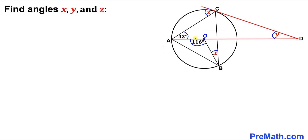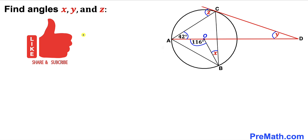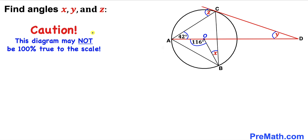Welcome to Pre-Math. In this video we have triangle ABC inscribed in a circle with center O. CD is a tangent line and the angles 42 degrees and 116 degrees have been given to us. We are going to calculate angle x, angle y, and angle z. Please don't forget to give a thumbs up and subscribe. Note that this figure may not be 100% true to scale.